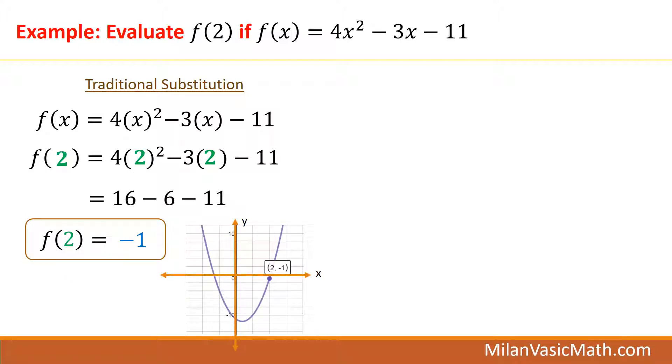If we were to graph f of x, we would see that the function f of x has a point 2 comma negative 1. It's in the fourth quadrant. Now let's look at something new called synthetic substitution. With synthetic substitution, you have to make sure that the equation is in standard form. The constant is really negative 11x to the 0 power. And we write the coefficient of each term. So we have 4, negative 3, negative 11.